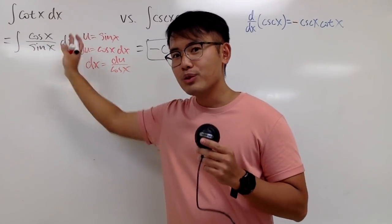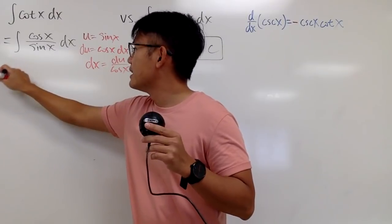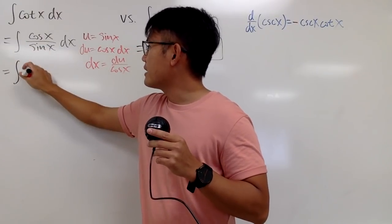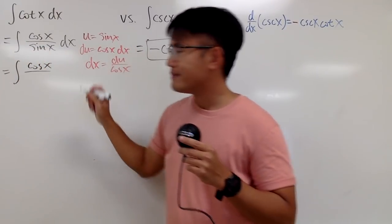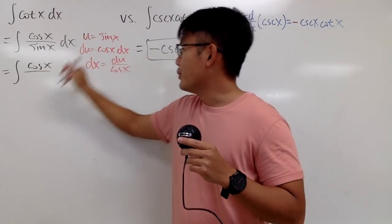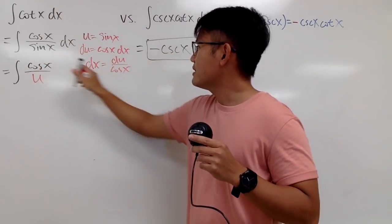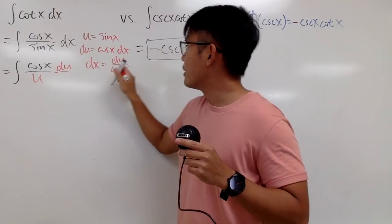So you can take this integral to the u world. You get integral cosine x over sine x is my u, and then dx is du over cosine x.